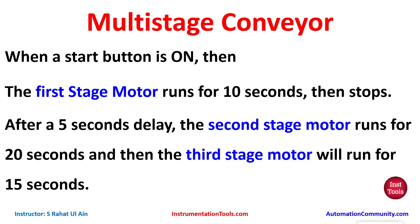Multi-stage conveyor: when a start button is on, the first stage motor runs for 10 seconds then stops. After a 5-second delay, the second stage motor runs for 20 seconds, and then the third stage motor runs for 15 seconds. For motor one we will use a timer TP, then for motor two we will use TON for 15 seconds and then TP for 20 seconds, and for motor three we will use TON for 35 seconds and TP for 15 seconds.